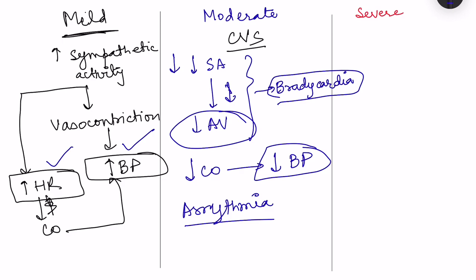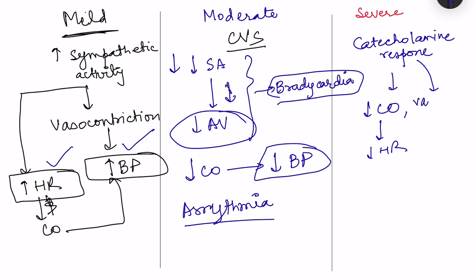In severe hypothermia, the catecholamine response becomes too much blunted — the sympathetic system gets depressed, decreasing catecholamine release. There is further decrease in cardiac output and heart rate, and ultimately vasodilation occurs. When vasodilation occurs, the person can no longer conserve heat; blood volume previously kept to the core now reaches the surface, causing more and more heat loss — again a positive feedback. There is risk of ventricular fibrillation and the person can die due to cardiac arrest.